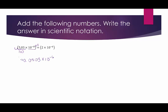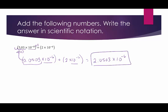So 0.0503 times 10 to the negative 6 and the original 5.03 times 10 to the negative 8th are equivalent. Now we're adding 0.0503 plus 2, which gives 2.0503 times 10 to the negative 6. And there we have our answer.